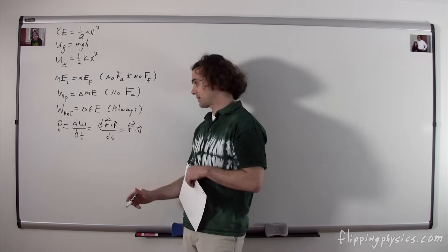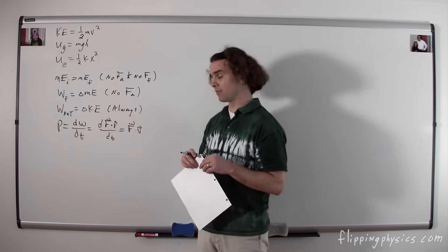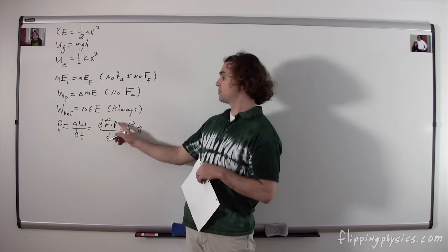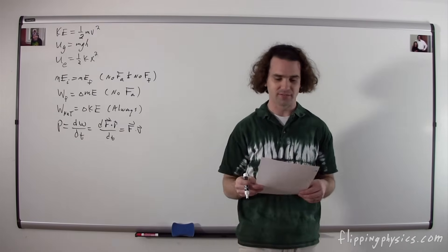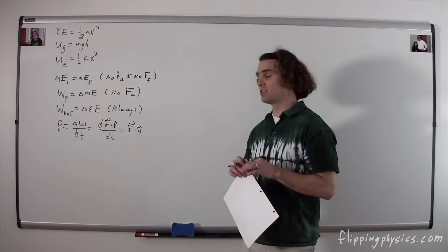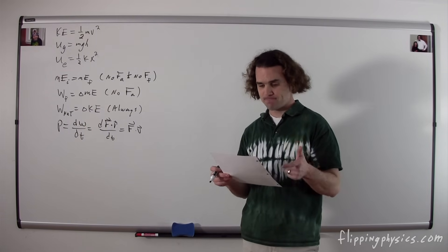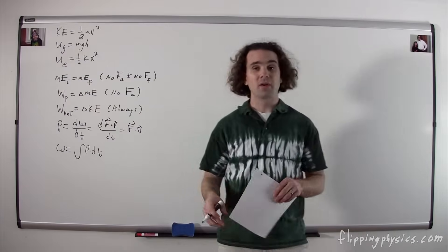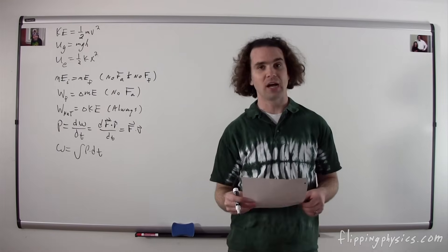Power is the derivative of work with respect to time, which equals the dot product of force and the derivative of position with respect to time — or, the dot product of force and velocity if you have a constant force. Power is the rate at which work is being done, in joules per second. Remember you can rearrange this: work equals the integral of power with respect to time.